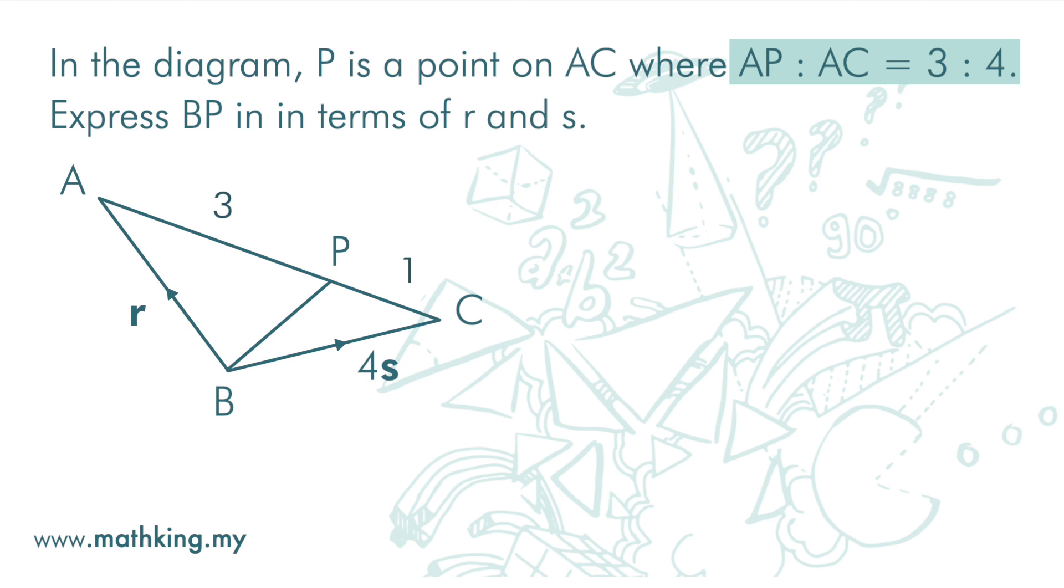Now, we want to find BP. BP is BA plus AP. BA is R. AP is 3 over 4 of AC. See the diagram.